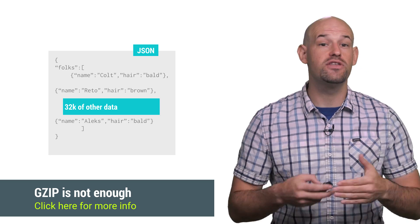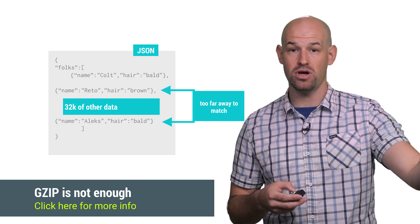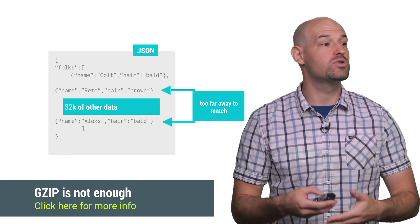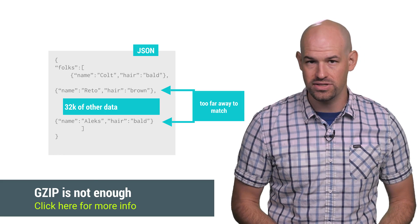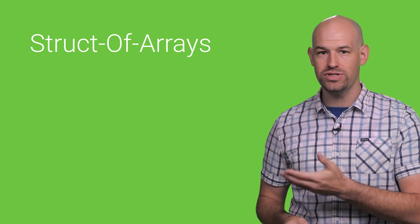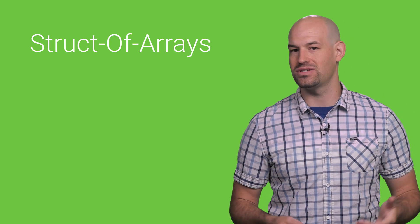So the larger your serialized classes, the further away similar data types are, meaning that there's less duplicating inside of that 32k window, resulting in less compression savings. In general, using the array of structs form creates larger serialized files that don't really compress as well as they should.